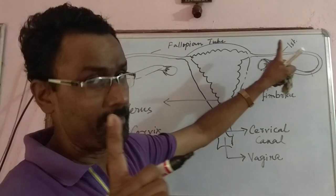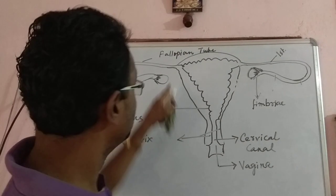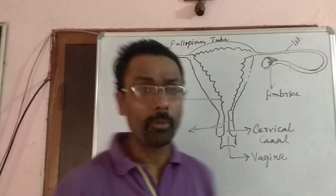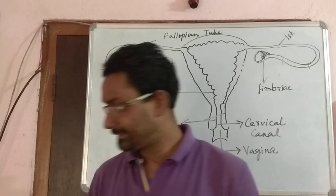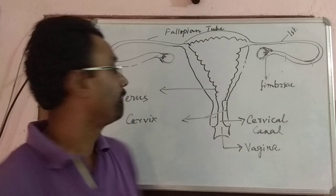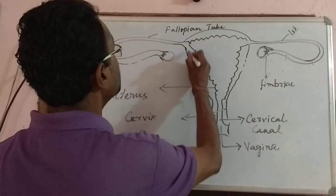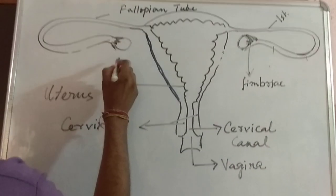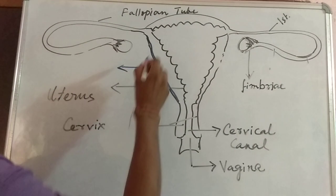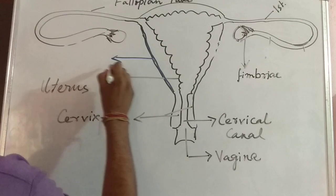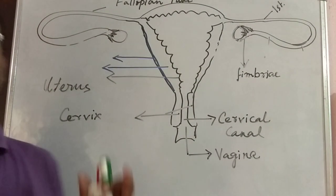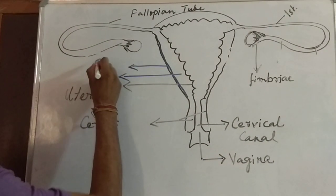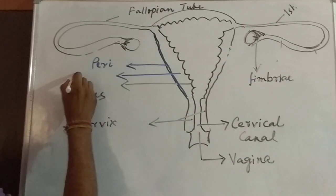The fallopian tube — one pair with three parts — and the uterus, which is one. The uterus has three layers that you have to keep in mind. The ovary also has three layers, which I am showing here with three colors.